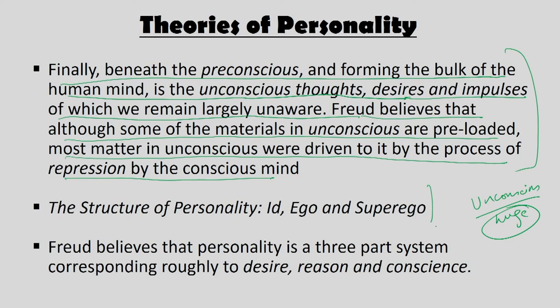The next part of Freud's theory is the structure of personality. Freud believed human personality has three structures: the id, ego, and superego. Think of the id, ego, and superego as...